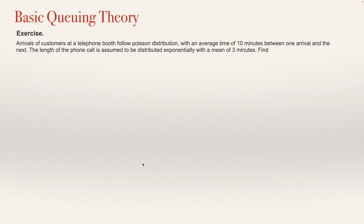In this video, I saw an exercise that was asked by one student. The exercise says like this: arrivals of customers at a telephone booth follow a Poisson distribution with an average time of 10 minutes between one arrival and the other.